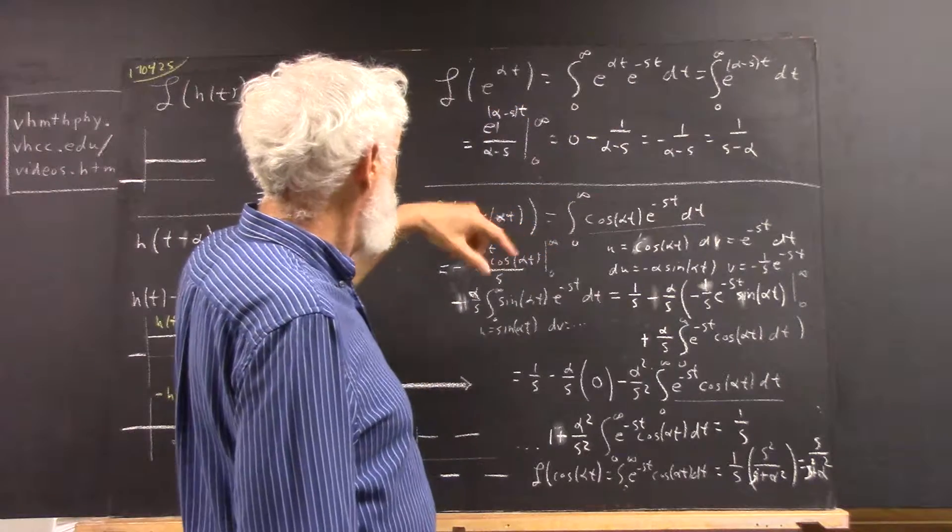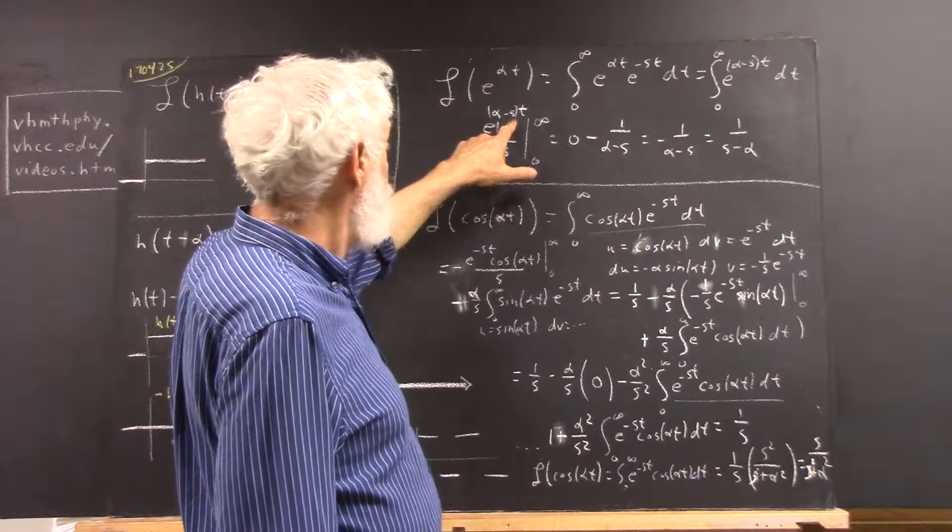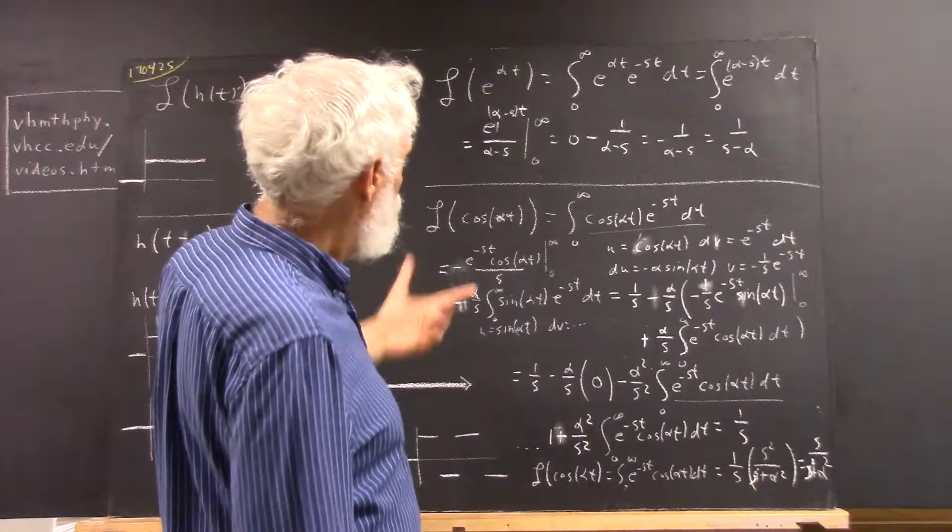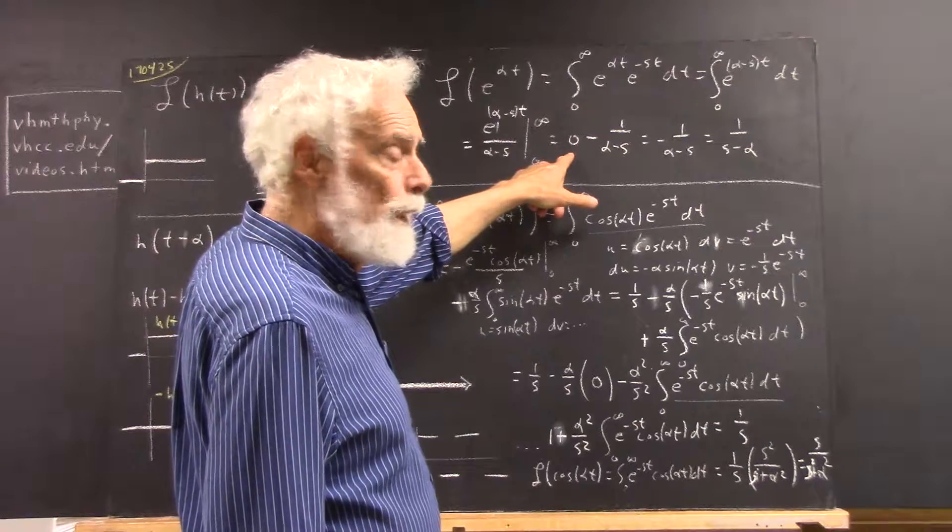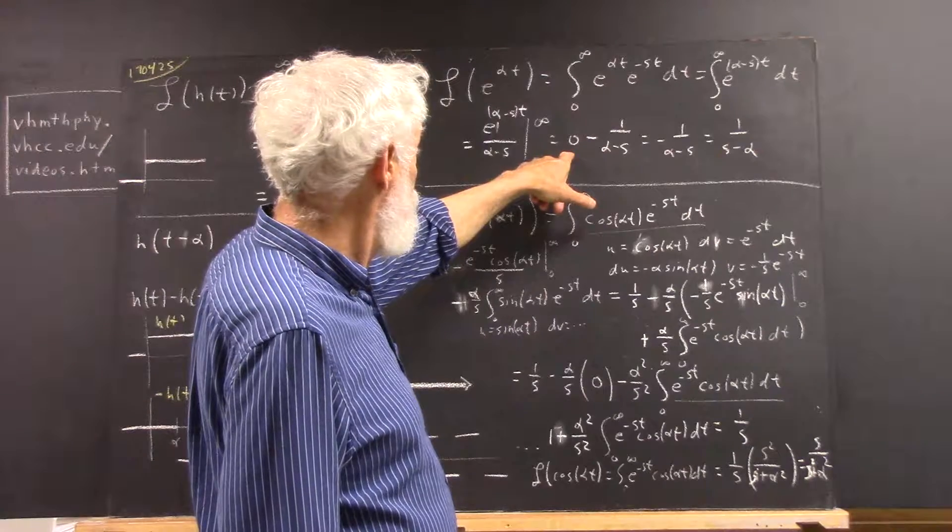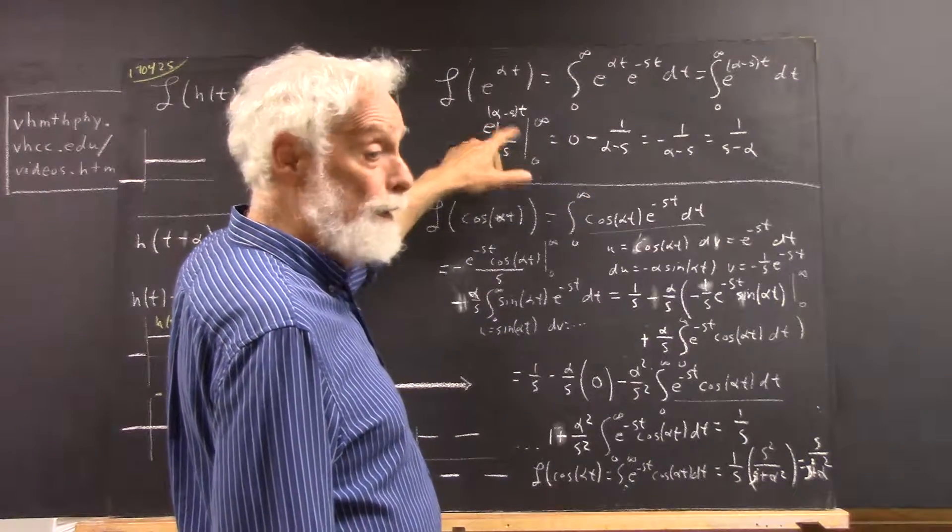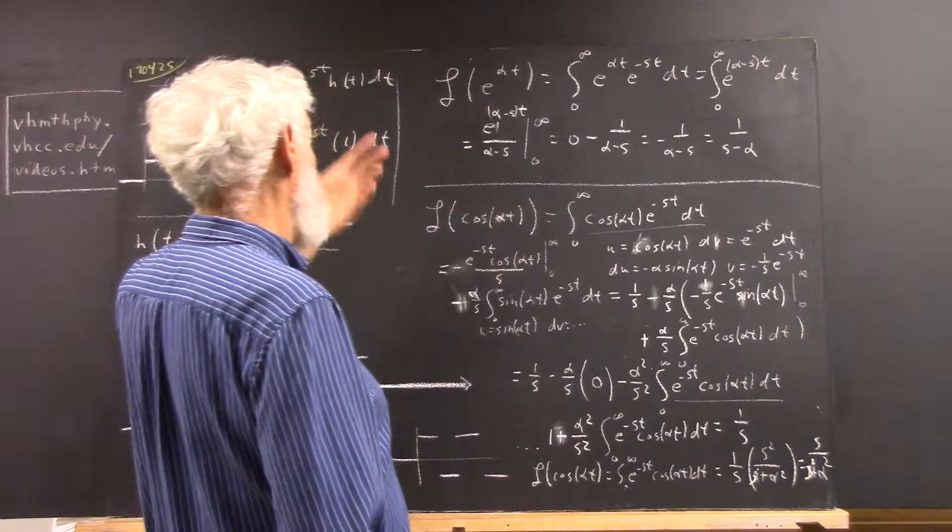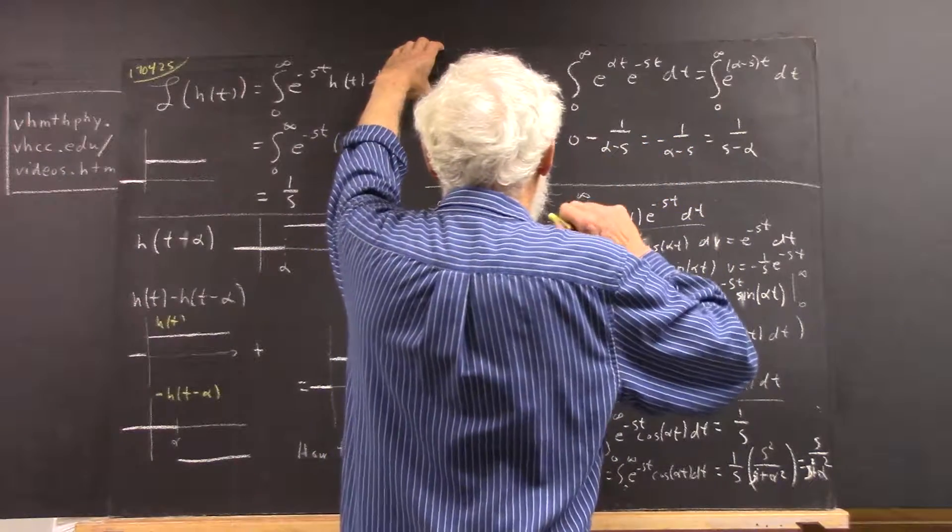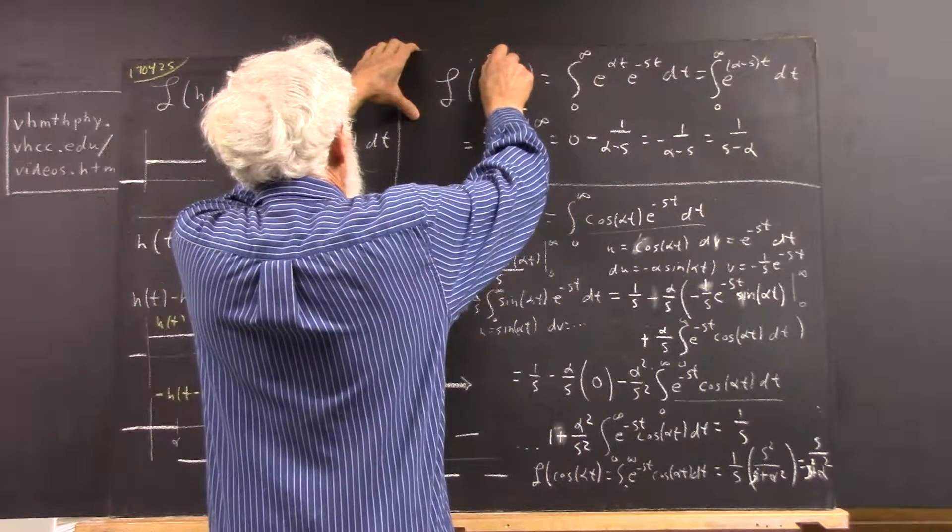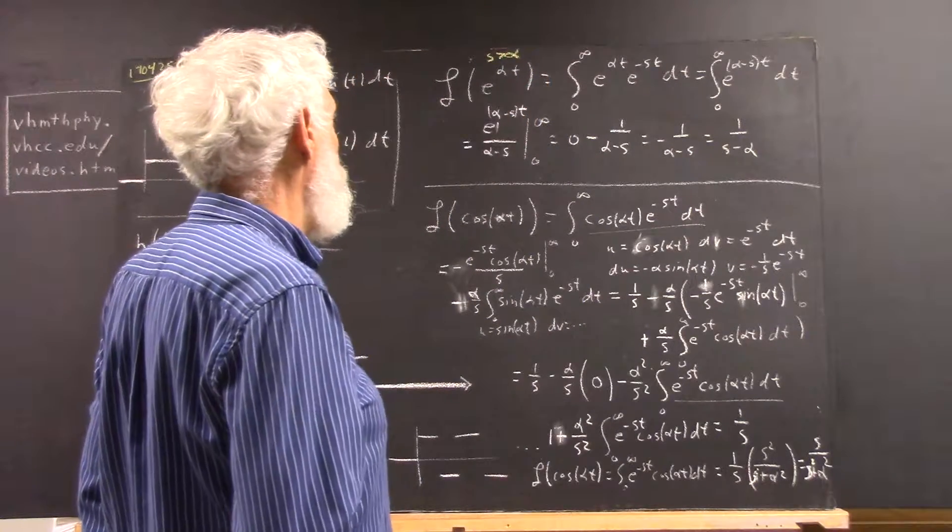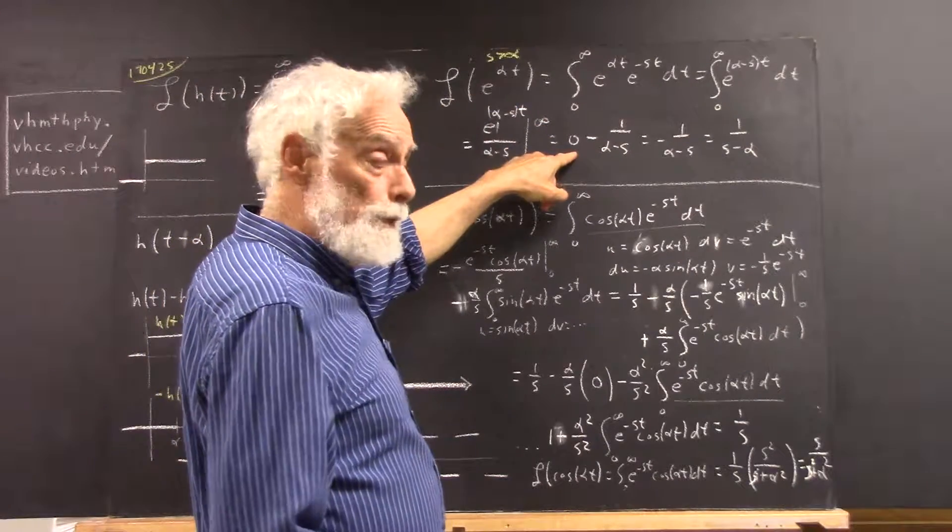We get, well, at infinity, s being our variable. I'm sorry, t being our variable. We get zero provided what? Provided s is bigger than alpha. Okay, so we didn't put that in here, but that's necessary. So, for s greater than alpha, we're going to get zero.